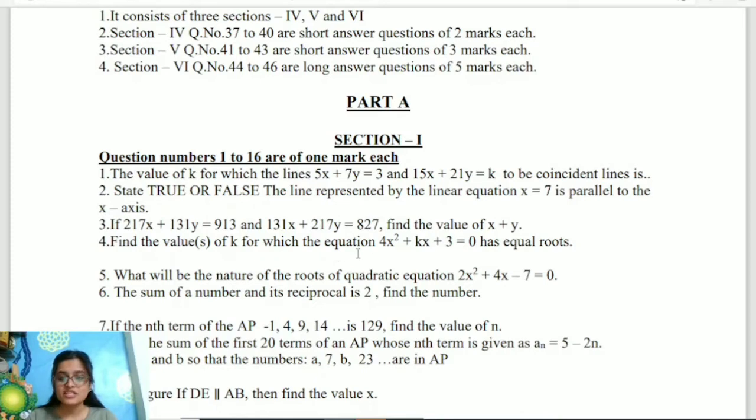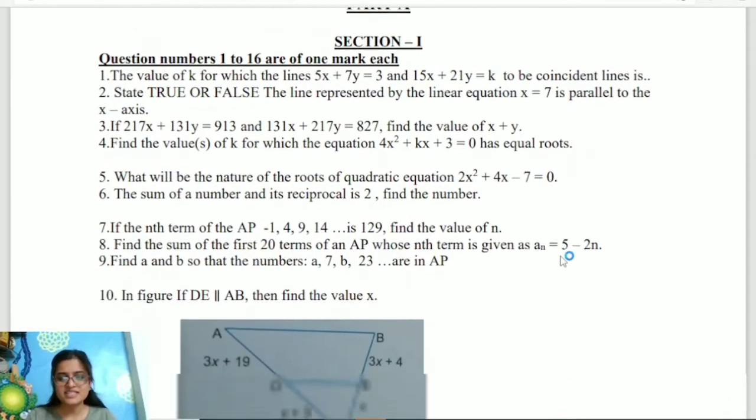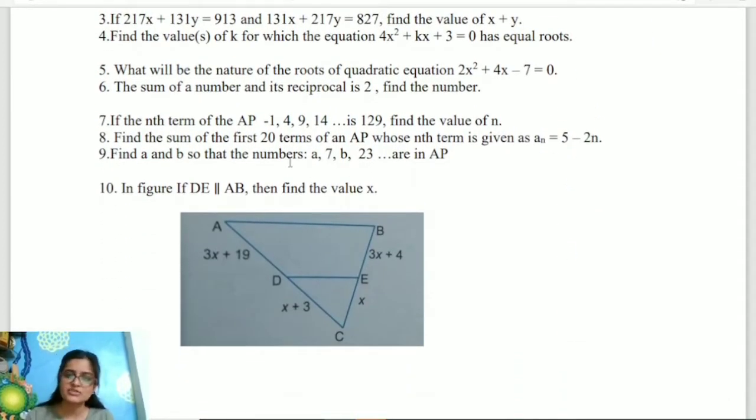Question number 4: Find the value of k for which the equation 4x square plus kx plus 3 equals 0 has equal roots. Very easy, you can easily solve this question. Question 5: What will be the nature of the roots of the quadratic equation 2x square plus 4x minus 7 equals 0. Question number 6: The sum of a number and its reciprocal is 2. Find the number. Very easy. You can use x plus 1 by x and solve it.